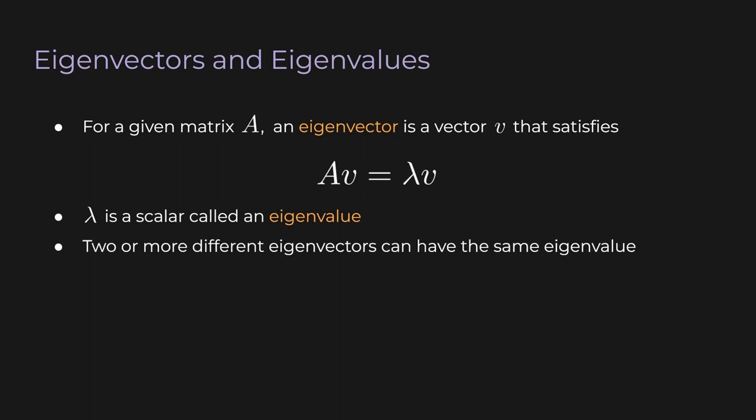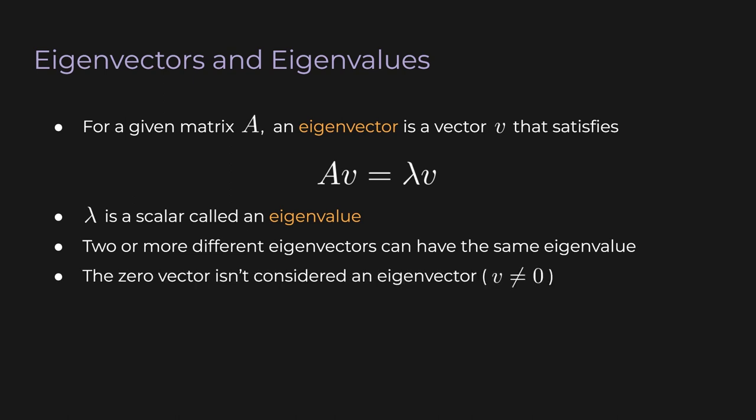Now two different eigenvectors can have the same eigenvalue. In that case we say the eigenvalue is repeated. By the way, the zero vector will of course satisfy this equation for any A and any lambda, so the zero vector isn't considered an eigenvector.